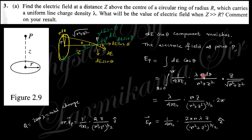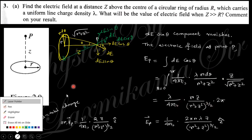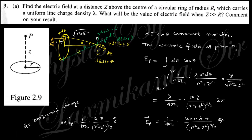The element dE equals (1 over 4π epsilon naught) times (lambda R d theta) over (R² + z²), and cos theta equals z divided by the hypotenuse sqrt(R² + z²). Integrating theta from 0 to 2π, the angular variable integrates out — noting that the theta in the ring and the theta in the triangle are different and use different symbols — and since z, R are all constant, the integral gives 2π.